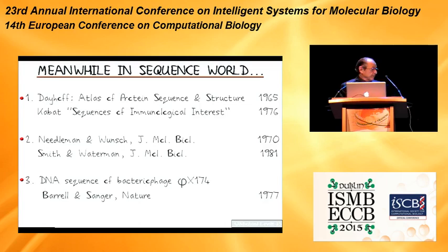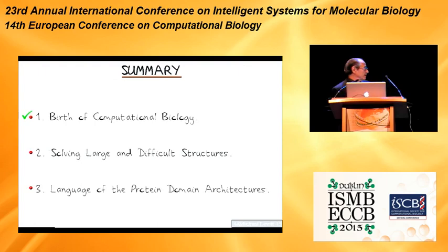When the sequence of Phi X was determined by Bart Burrell with Fred Sanger in the mid-1970s, Bart Burrell actually came to me and said, was I interested in DNA sequencing? And I said, no, no, no — that's just too boring for me, it's in one dimension. Talk to Roger Staden. I guess maybe I missed an opportunity there.